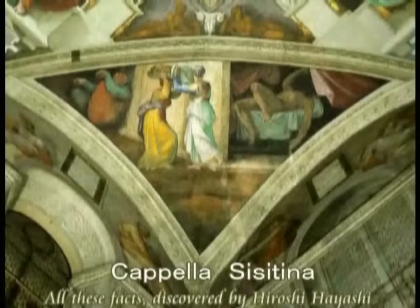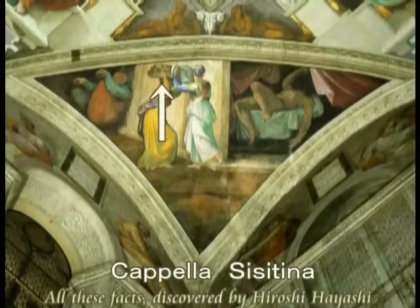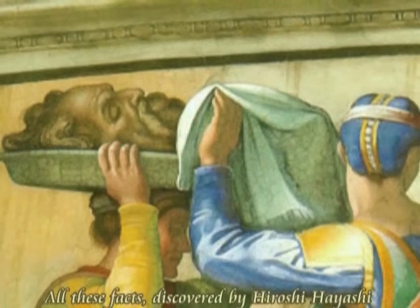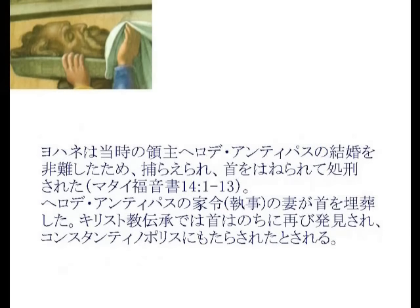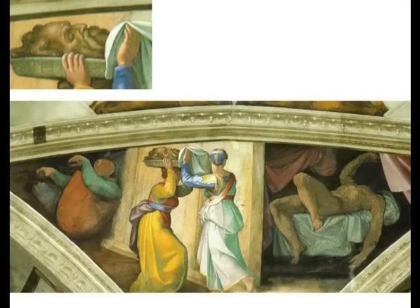処刑されたヨハネは替え玉でした。その証拠がバチカンのカペラシスティーナに残っていました。バプティストヨハネは当時の領主ヘロデ・アンティパスの結婚を非難したため捕らえられ、首をはねられ処刑されました。ヘロデ・アンティパスの妻が首を埋葬し、キリスト教伝承では首は後に再び発見されコンスタンチノポリスにもたらされたとされています。その時の様子を表現したのがこの天井画と言われています。